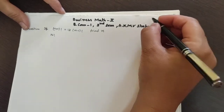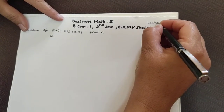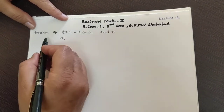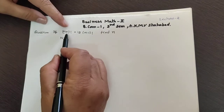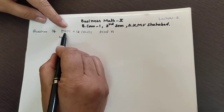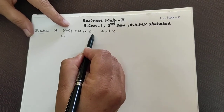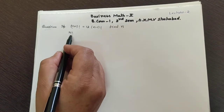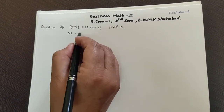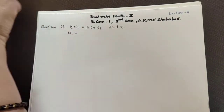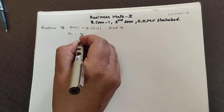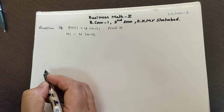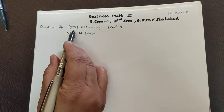Good morning students, it's our second lecture. Topic is permutation and combinations. The question is: find n if (n+1)! = 12·(n-1)!. In the last lecture we studied that n! = n·(n-1)!, so apply this formula on the left hand side.